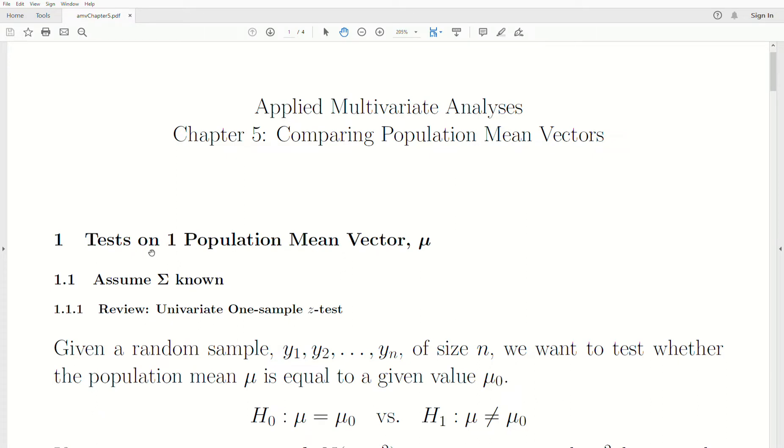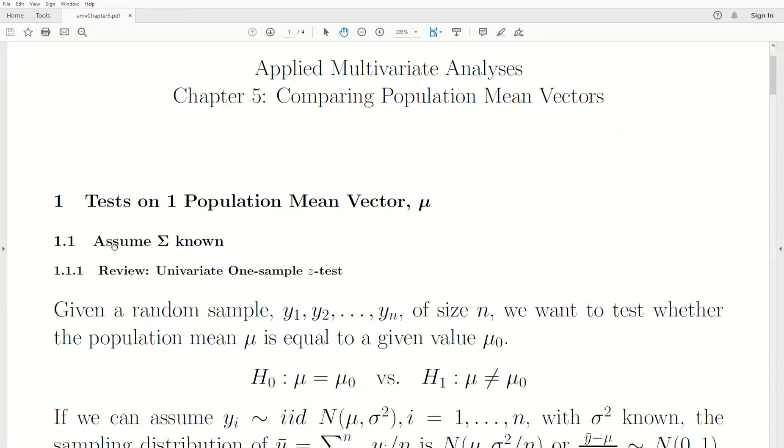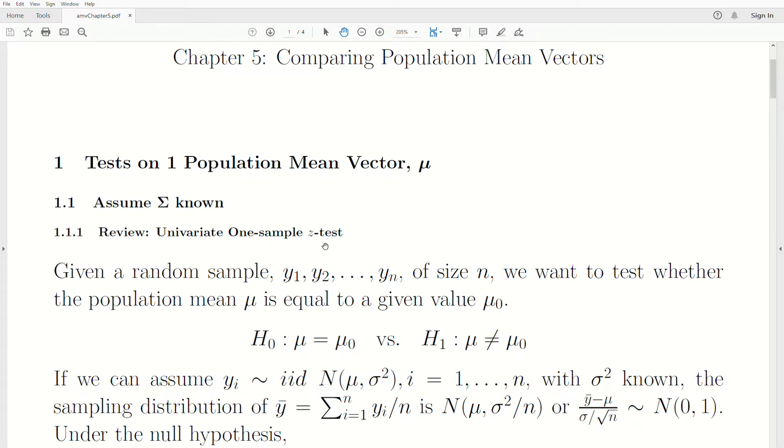And first, we'll look at tests for one population mean vector, and we'll also assume that the covariance matrix is known. Now, a quick review of the univariate one-sample z-test is this.